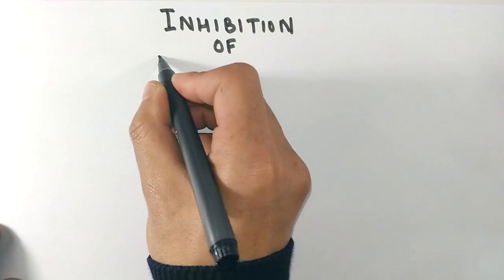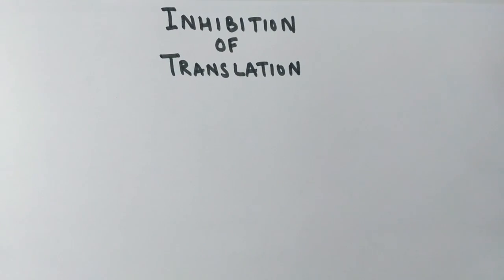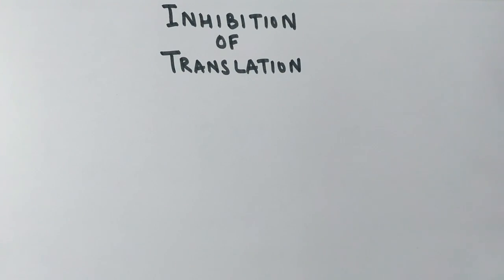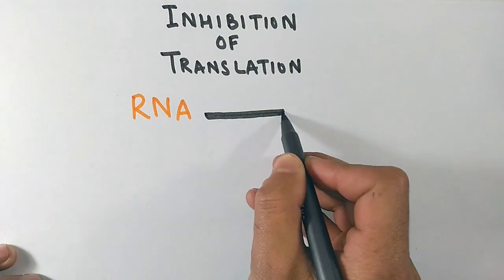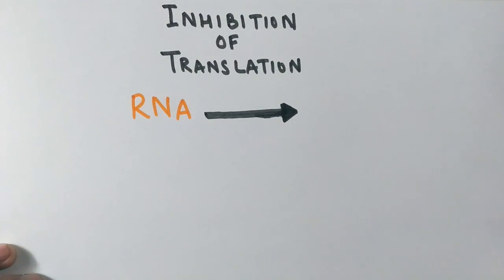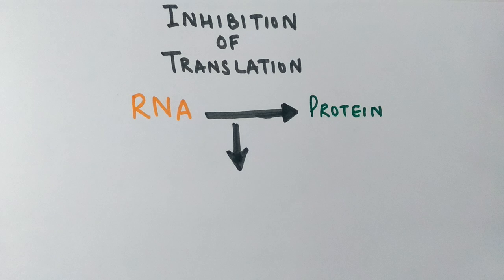Then we see the inhibition of translation process by antibiotics in bacteria. Here in this process, the information present on RNA, particularly the mRNA, gets transferred into a product called protein. The translation process in which a final functional protein is made happens to occur in ribosome.